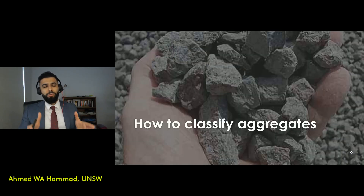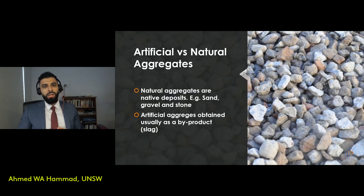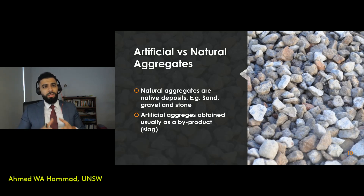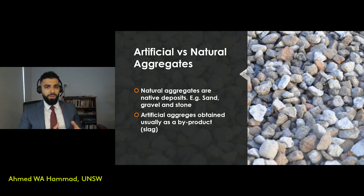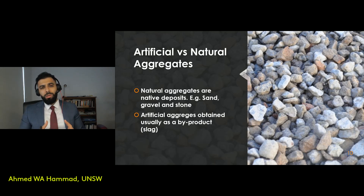How do you classify aggregates? The first classification is whether an aggregate is artificial versus natural. A natural aggregate is produced by nature — examples include sand, gravel, and stone. Artificial aggregates, on the other hand, are mostly by-products; slag is an example.